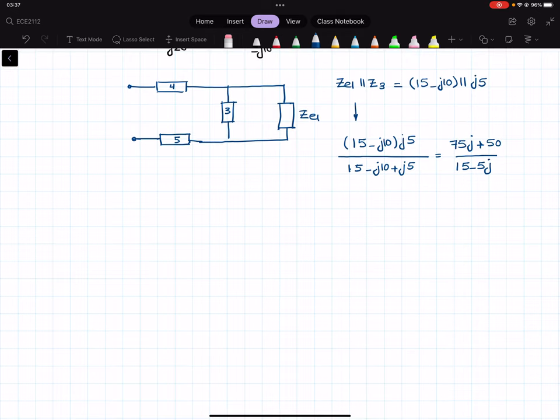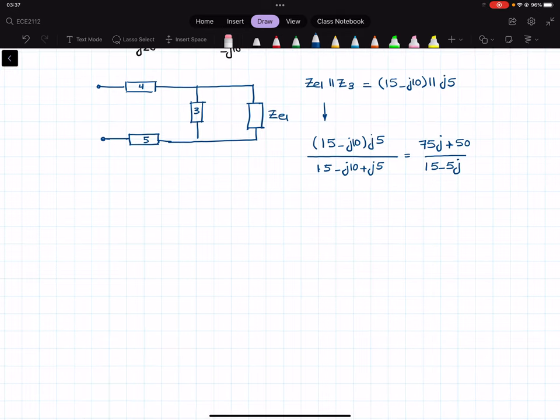And then I have a negative sign there, so it will be positive 50 over 15 minus 5J. So if I take out a 5 in the numerator, I'm going to get 15J plus 10, and if I take a 5 out from the denominator, I'm going to get 3 minus J. So 5 and 5 will be cancelled. So the parallel of these two would become 10 plus J15 over 3 minus J.